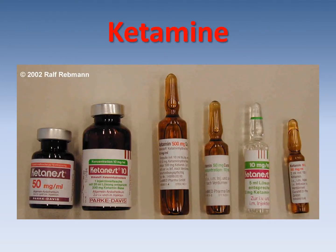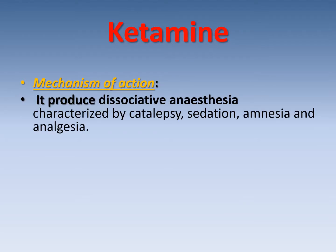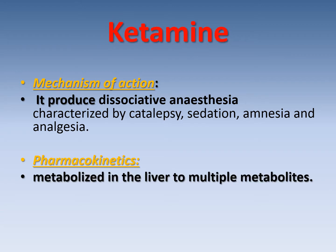Another example is ketamine, also known as ketalar. Mechanism of action: it produces dissociative anesthesia — this is very important — characterized by catalepsy, sedation, amnesia, and analgesia. Pharmacokinetics: it is metabolized in the liver to multiple metabolites and has no cumulative effect. The dose is 1 to 2 mg per kg IV, and it can also be given intramuscularly in a dose of 5 to 10 mg per kg.